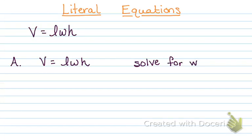Today we're going to talk about literal equations. Literal equations is just a way to manipulate a situation that is occurring when we have multiple letters. If you look at V equals L times W times H, that is the volume formula — length times width times height. It just means taking an existing formula like this and solving for a different variable.